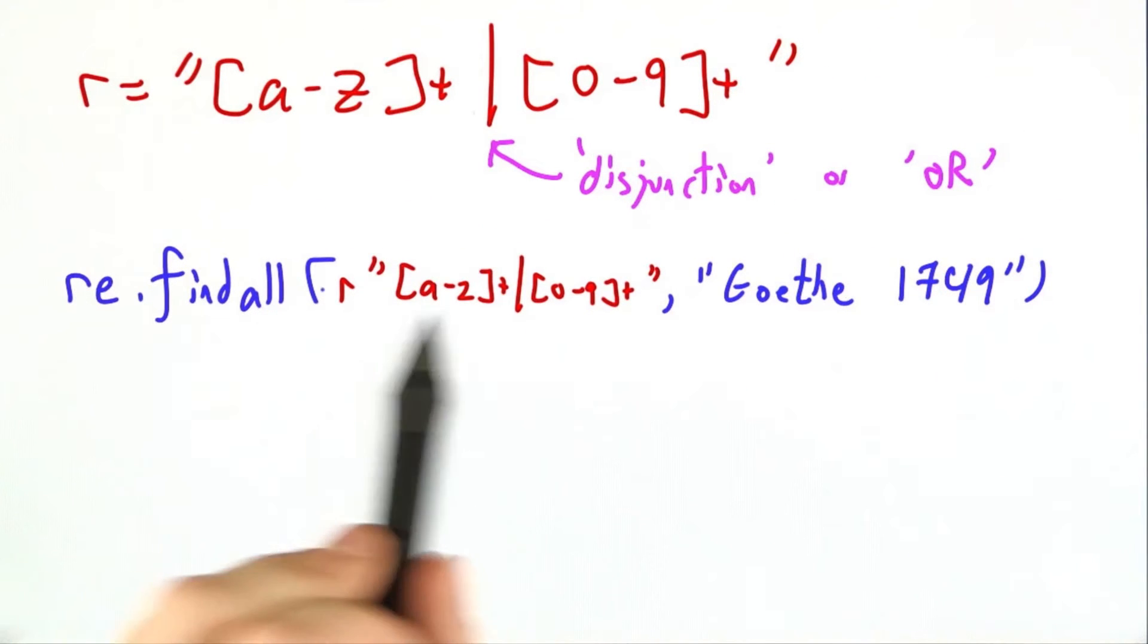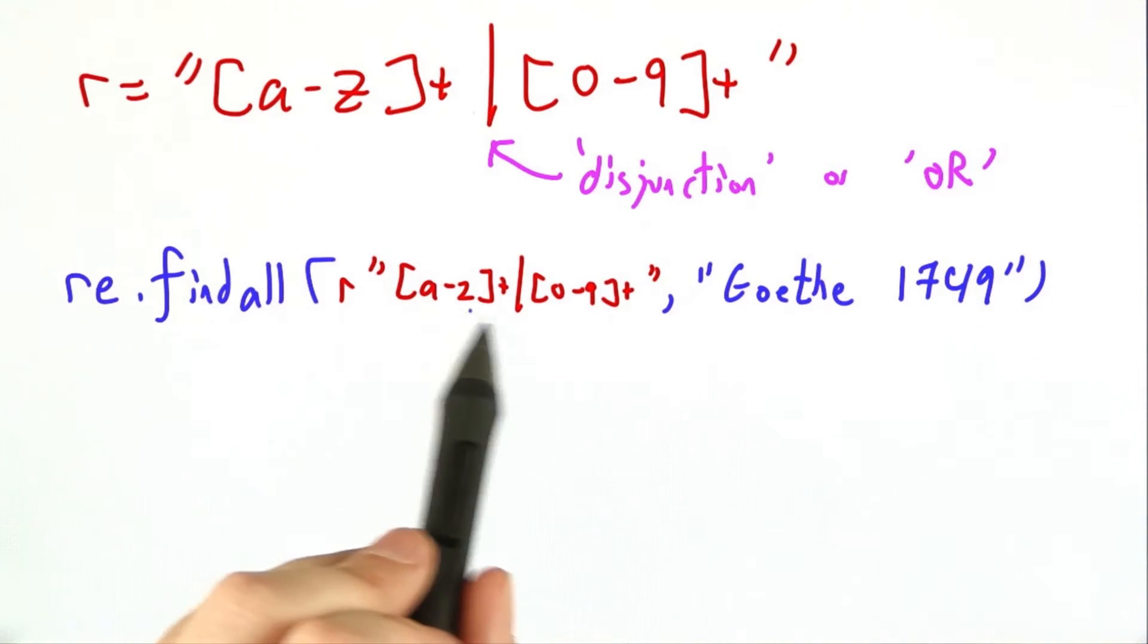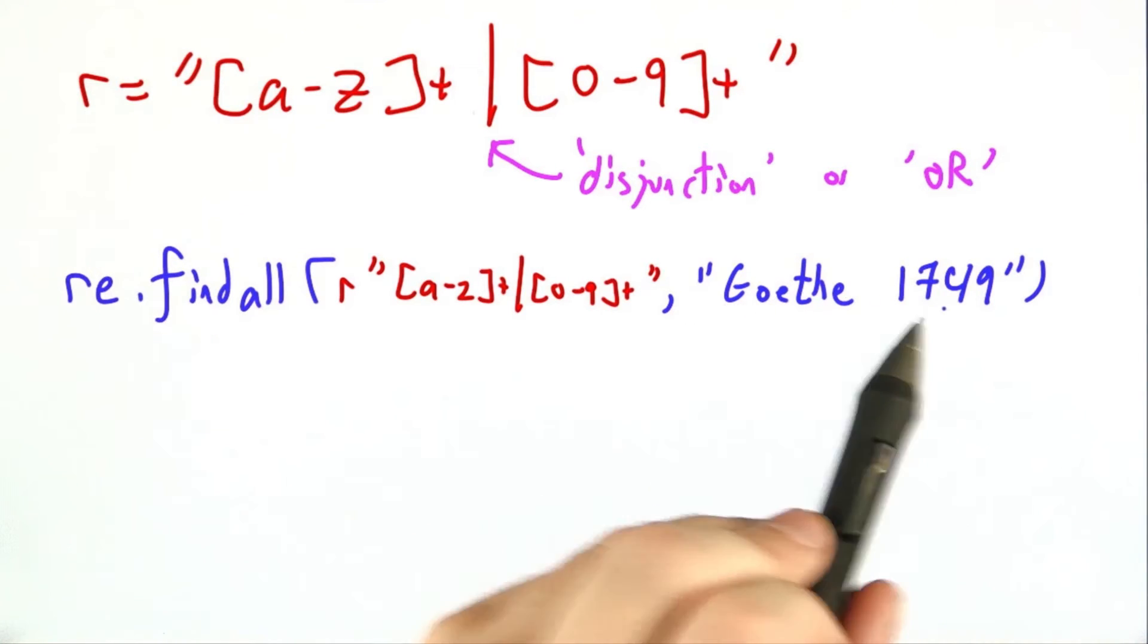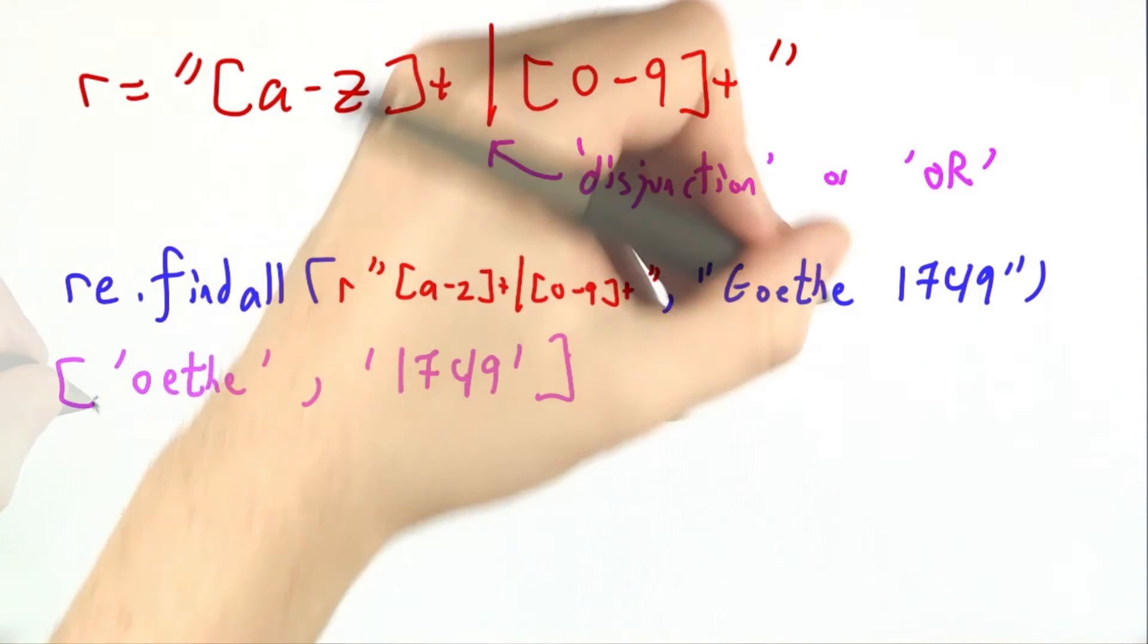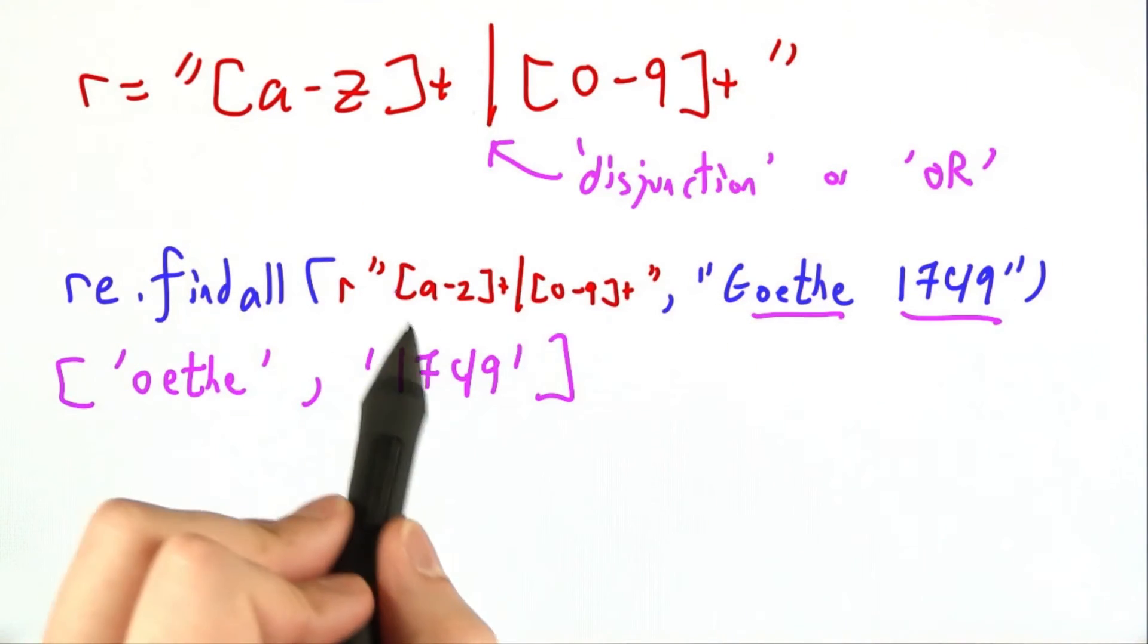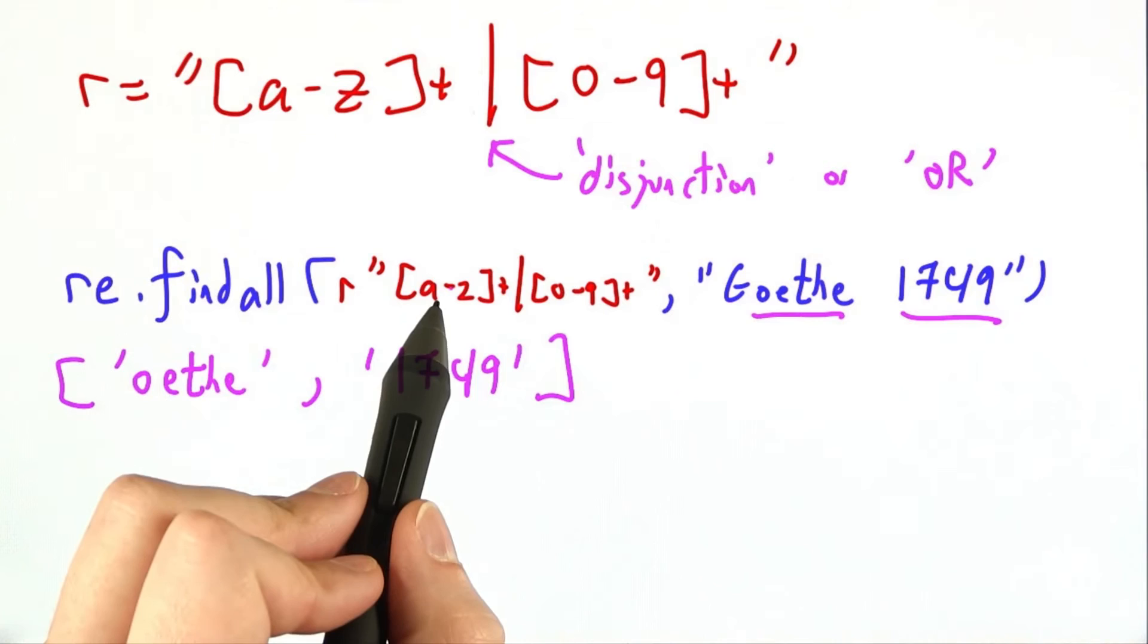For example, let's say we want to find all matches of lowercase a through z plus or 0 through 9 plus in Goethe 1749. We'll get both Oethe and 1749. We don't get the capital G because we asked for lowercase letters.